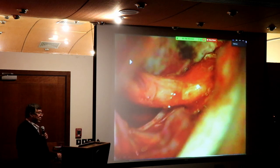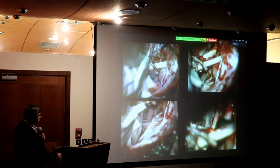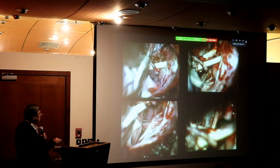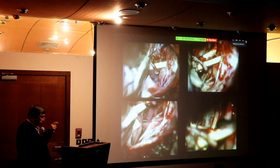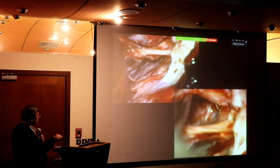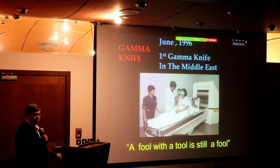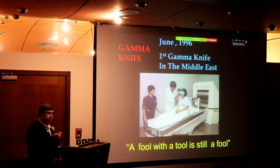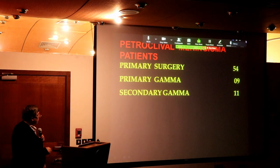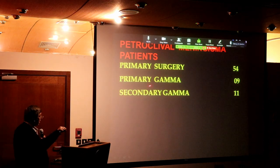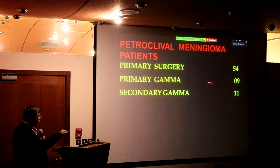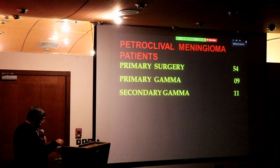Did I use gamma knife? Yes — you have to use it in the proper places. I treated 54 cases by surgery, and in the same period I used gamma knife primarily in 9 cases — patients who could not tolerate surgery. After surgery with recurrence, I used it in 11 cases. Examples: a 76-year-old patient unfit for surgery — treated with gamma knife. A 73-year-old unfit for surgery. For cavernous sinus-type tumors, I removed all except the part in the cavernous sinus and gave gamma knife to the residual.